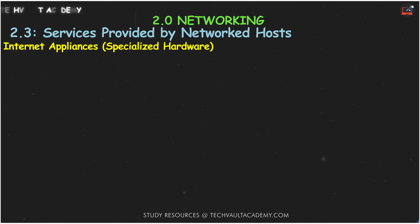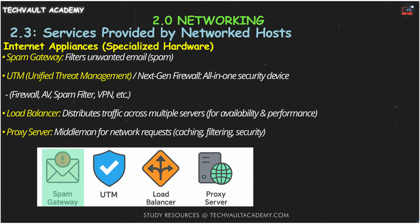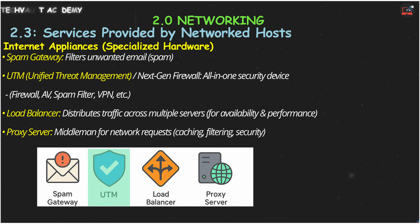Now let's look at some specialized internet appliances. Spam gateways are your email's first line of defense, filtering out unwanted junk mail before it hits your inbox. A UTM, or Unified Threat Management Device — also known as a next-generation firewall — is an all-in-one security powerhouse. It's like a Swiss army knife for network protection, often combining a firewall, virus scanner, spam filter, and more in a single box.